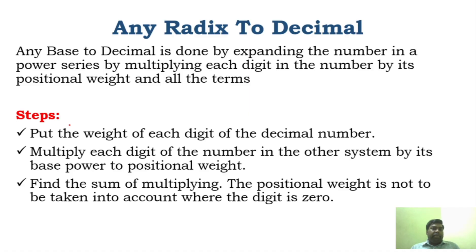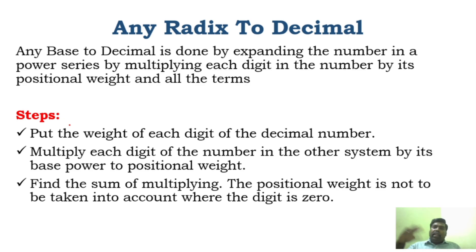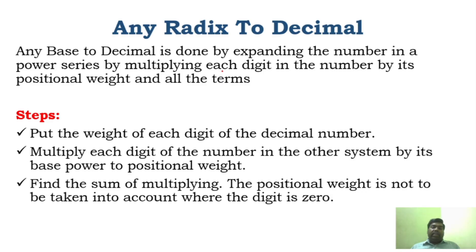Before starting, let me tell you all the number system conversions are very simple and very easy, but provided you have to understand the logic behind each and every conversion. You have to have a clear idea about the rules and regulation. For any radix to decimal, this is the rule: you can do it by expanding the number in a power series, multiplying each digit in the number by its positional weight.